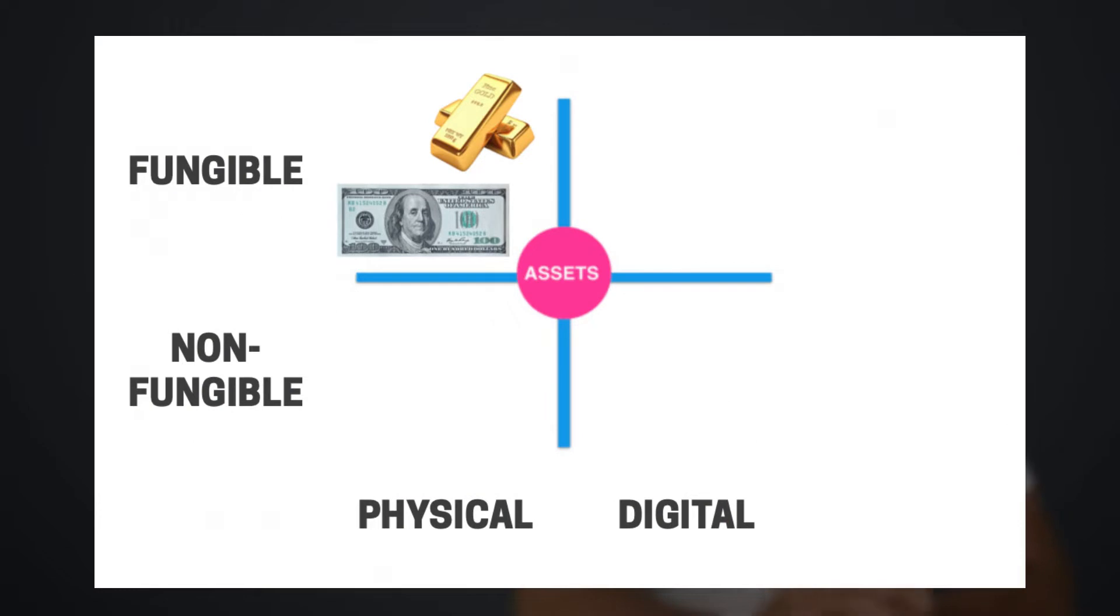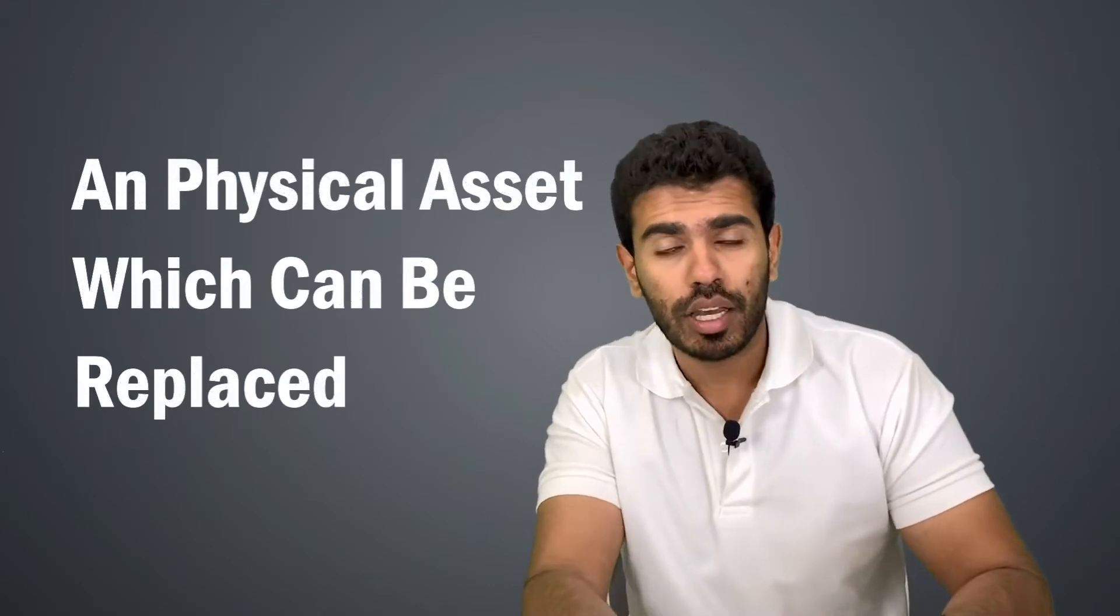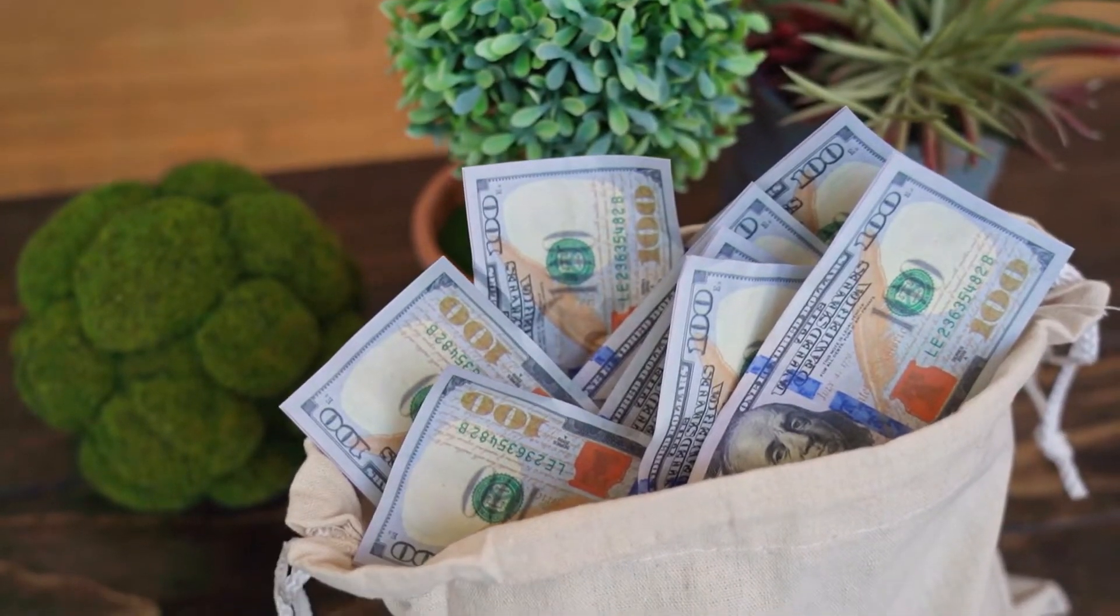Now let's look at these four quadrants. The first quadrant, we have fungible physical assets. That means an asset that can be replaced and it is in physical form. So you have money, gold, you have multiple different kinds of assets like maybe a car as well.